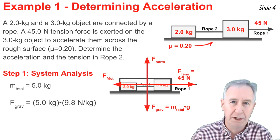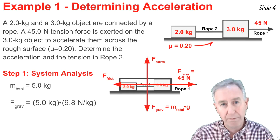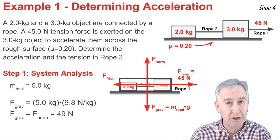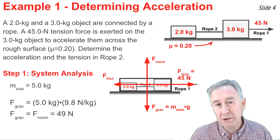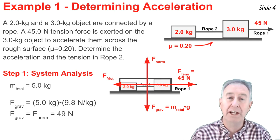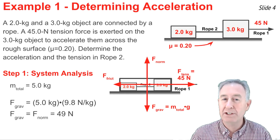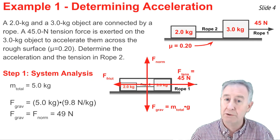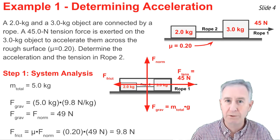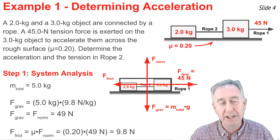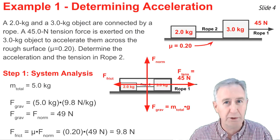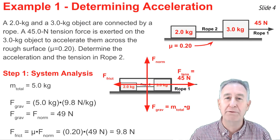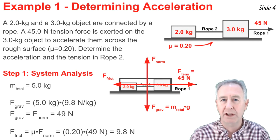I calculate F-grav: five kilograms times 9.8 Newtons per kilogram gives 49 Newtons. Since there's no vertical acceleration, the normal force equals the gravity force — 49 Newtons. I then calculate friction using mu times F-norm: 0.2 times 49 Newtons gives a friction force of 9.8 Newtons to the left.